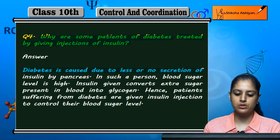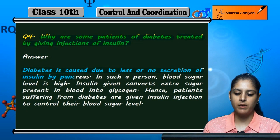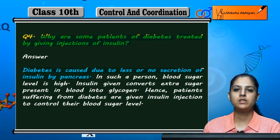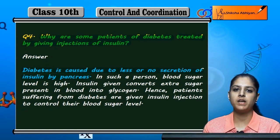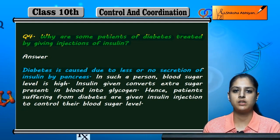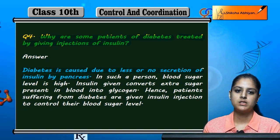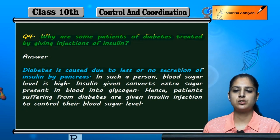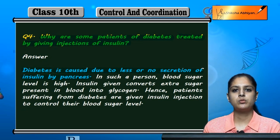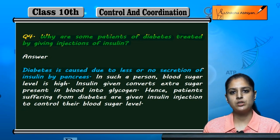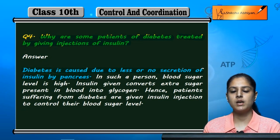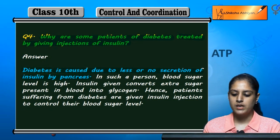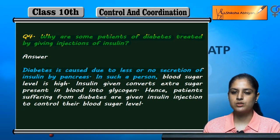...less or no secretion of insulin by pancreas. Insulin जो hormone है वो pancreas से secret होता है। Diabetes condition में या तो बहुत कम secretion होती है insulin की, या बिल्कुल होती ही नहीं।